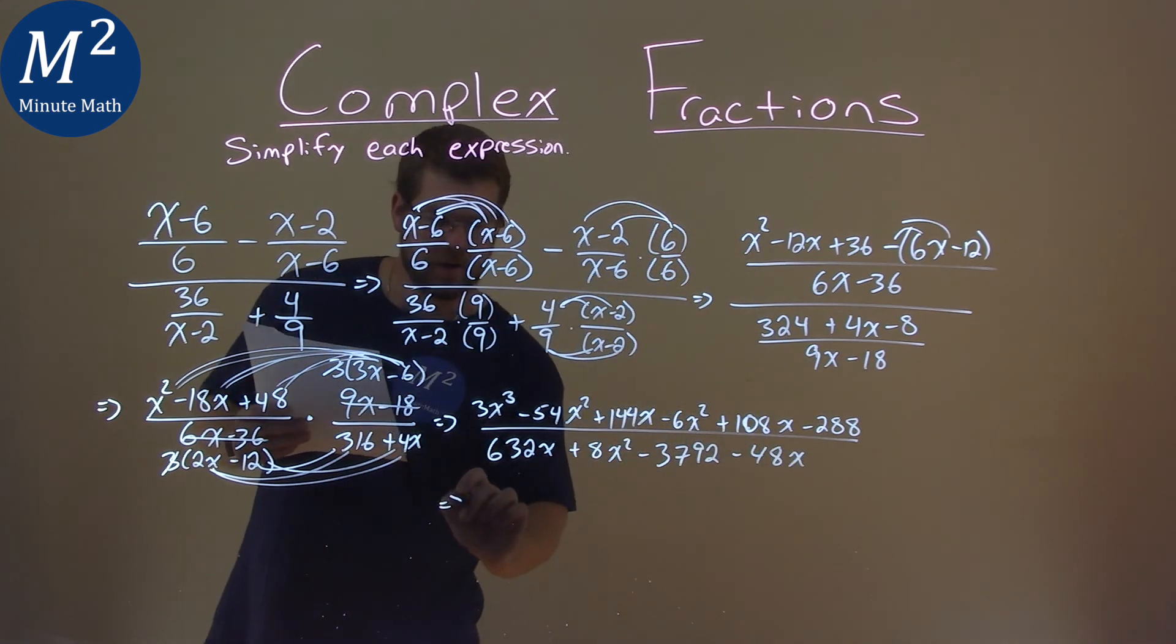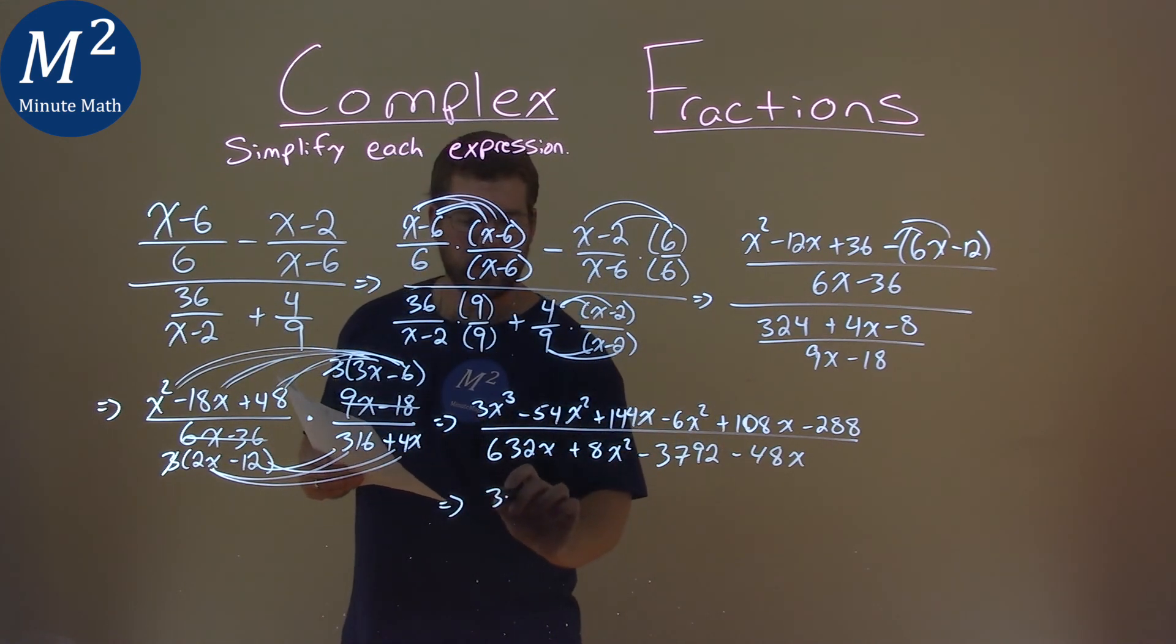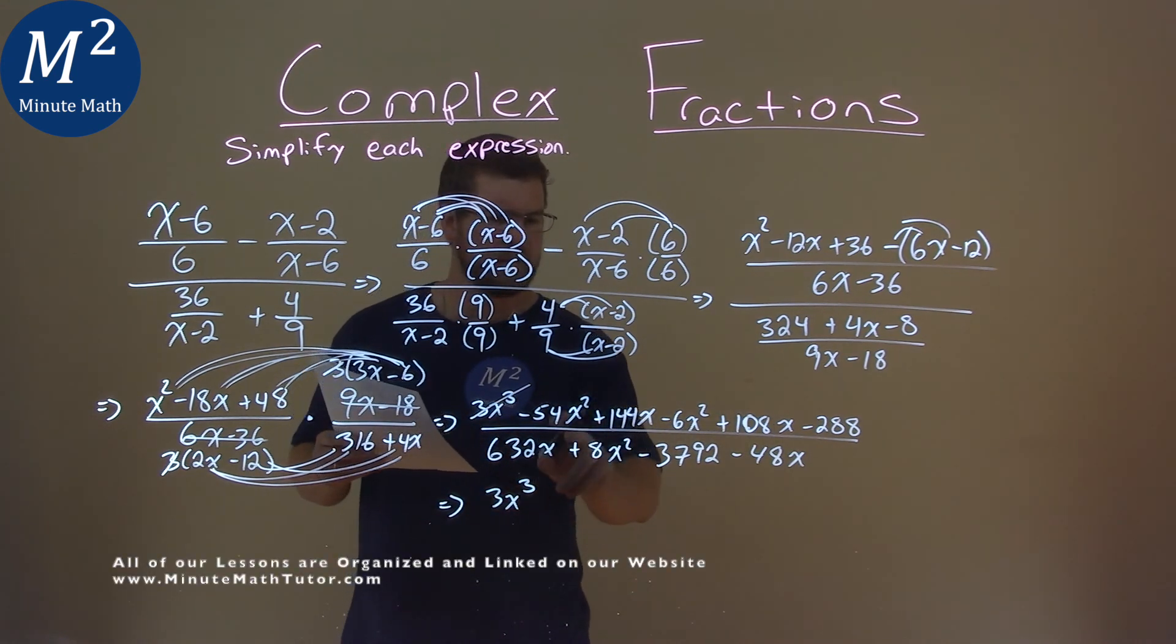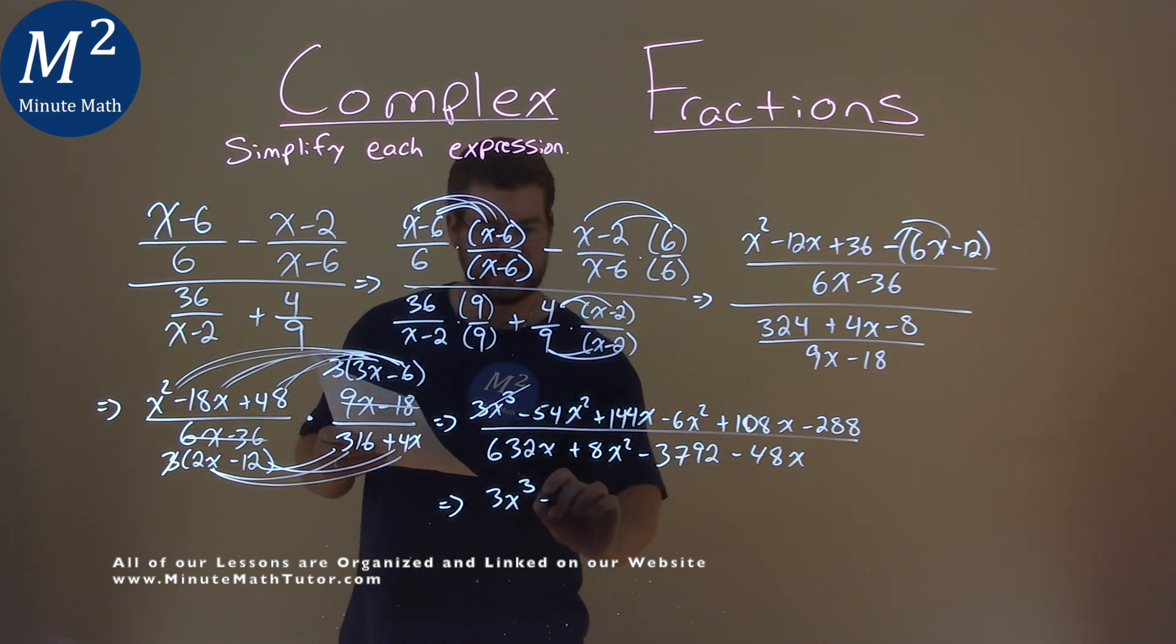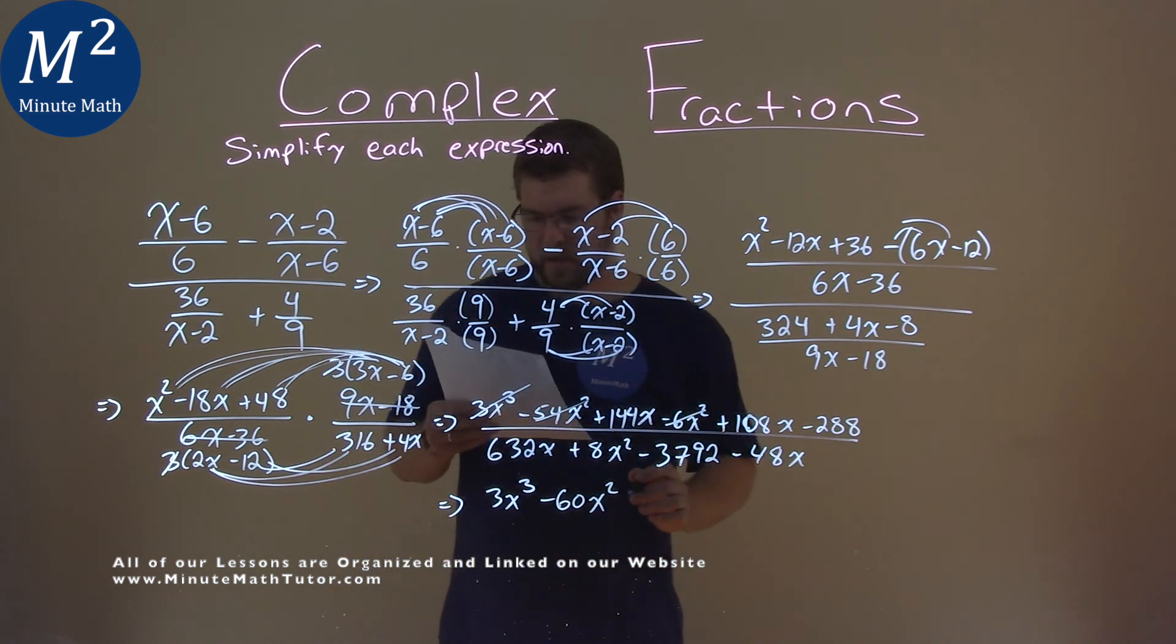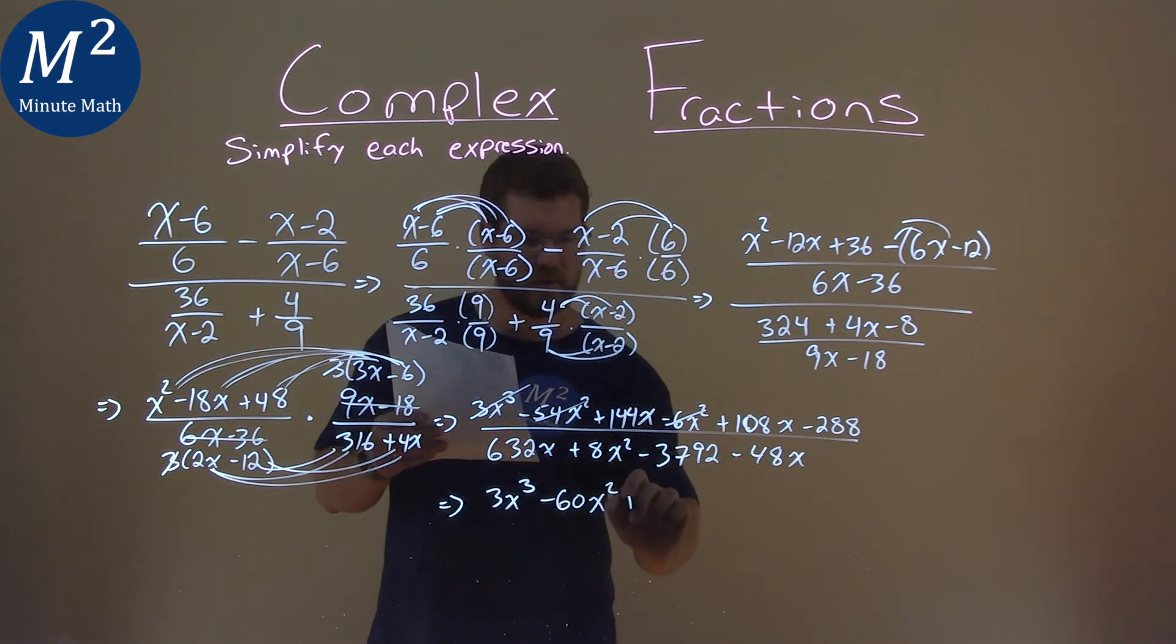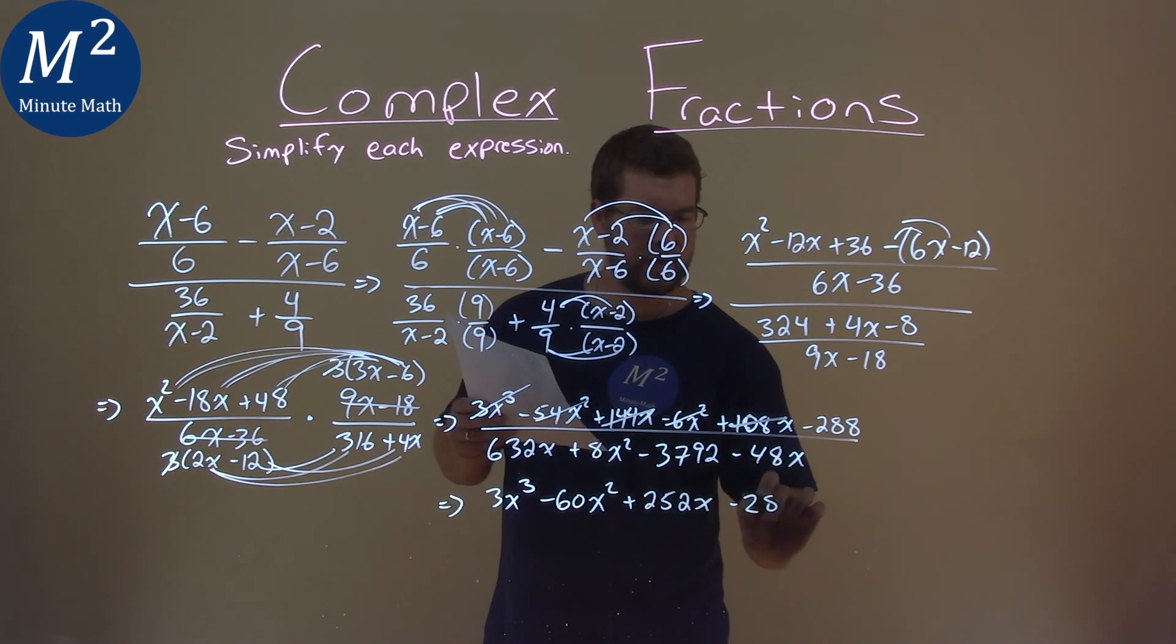We now have to combine our like terms in the numerator and the denominator. So, let's take our time here. Luckily, 3x squared. I'm going to, 3x to the third, I'm going to cross off when I've combined them. There's nothing else but a third power. Let's deal with the squares. Negative 54x squared minus 6x squared is a minus 60x squared. Cross these two off so don't forget anything. 144x and 108x add to be a 252x as such. And then we have a minus 288 right there.